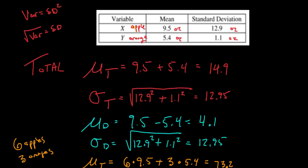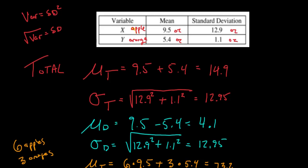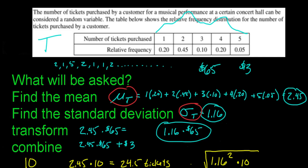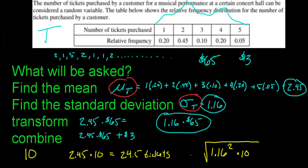That's it for random variables — it's actually pretty easy, just be very careful with combining. A lot of students mess that up. Also be careful: when transforming (converting units like tickets to dollars), it's okay to multiply the standard deviation directly. But the moment you're combining multiple people or items, you must work with variance first and then take the square root to get standard deviation. Random variables come up a lot on the AP test, especially in multiple choice.